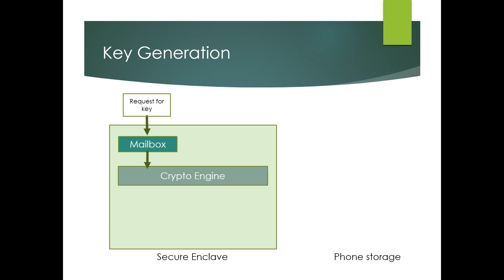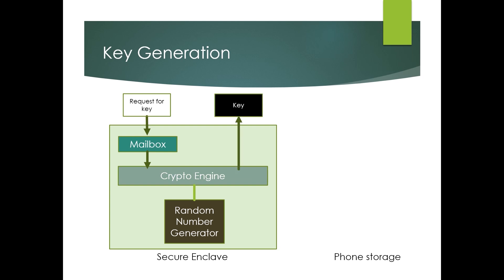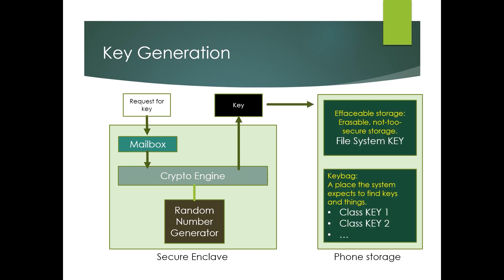Inside the Secure Enclave, we have something called a crypto engine, which does all kinds of different encryption operations. A request comes in for a key, the crypto engine asks the random number generator to generate one, and then spits out the key. So we request a file system key and a class key — this happens when a new operating system is installed, for example. The file system key is stored in something called effaceable storage, which is erasable, not terribly secure storage. And the class keys are stored in something called a key bag — a section of phone storage set aside for security-related information.